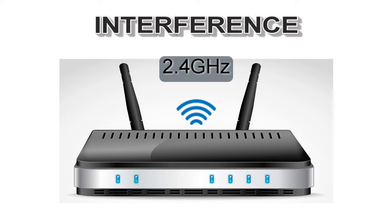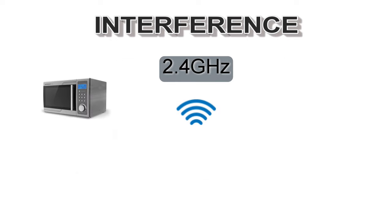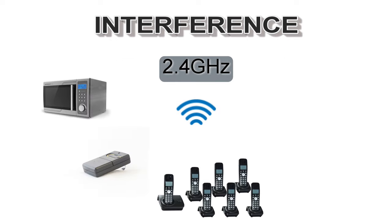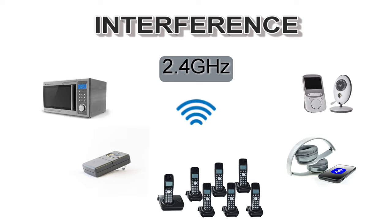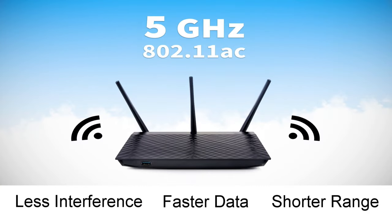Interference can also be a concern on the 2.4 GHz band. Many household devices will also use 2.4 GHz, such as microwaves, garage door openers, wireless telephones, and many more. This could cause overcrowding on the 2.4 GHz band, thereby affecting your ability to communicate between devices and may slow down your network. The 5 GHz band tends to have less overcrowding because fewer devices use it and it has more channels than the 2.4 GHz band.